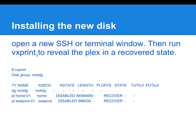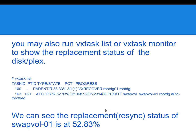Your current SSH session will be locked up. In the new session, you can type VXPrint, and you will see that the volumes and plexes are starting to recover. Some details were cut from VXPrint just to highlight the recovery of the system. We can see that home01 is being recovered, swapVol01 is being recovered, as well as rootVol. Another command you can run is VxTaskList or VxTaskMonitor. VxTaskList will give you a simple snapshot of what's going on and what the status is. VxTaskMonitor will give you a continuous flow of the same information.